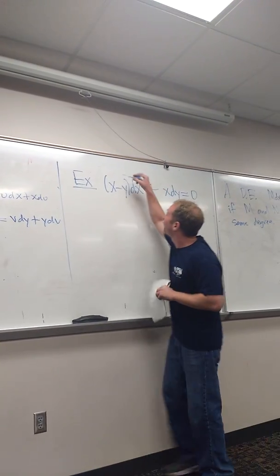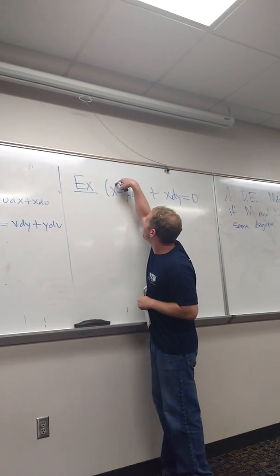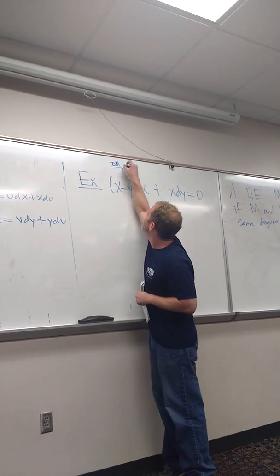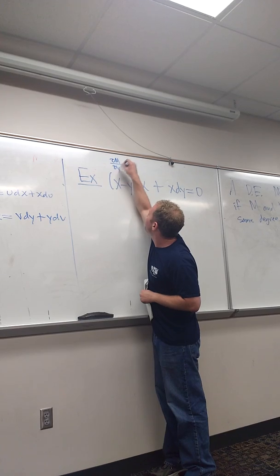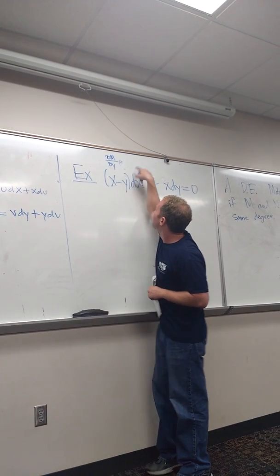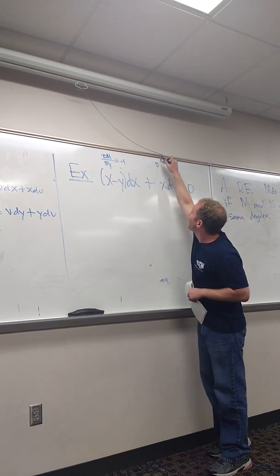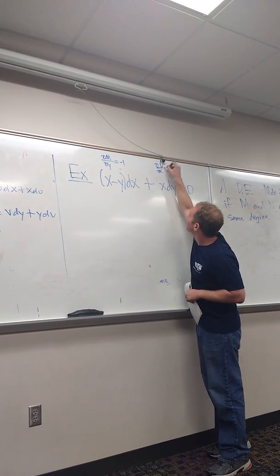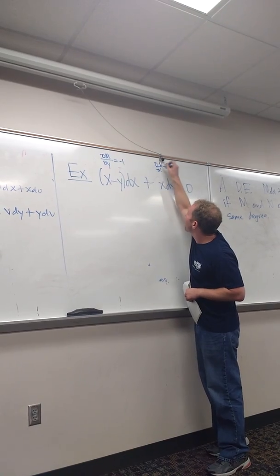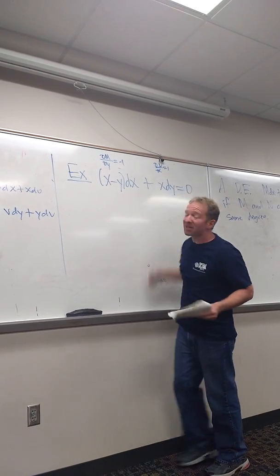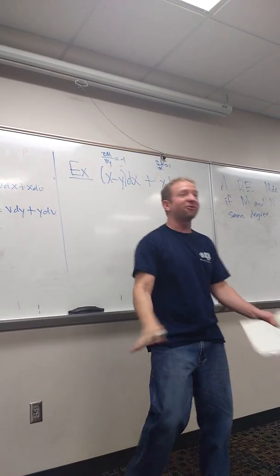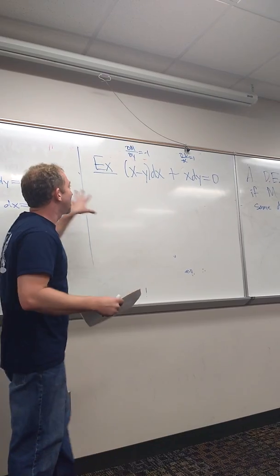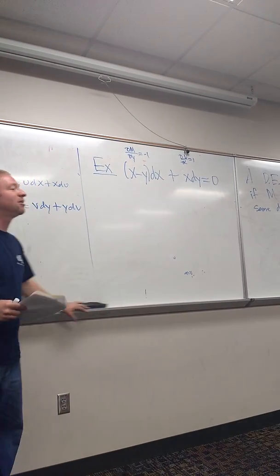Just for fun — if this was M, del M del y, del N del x, what would that be? We'd get 1 and then del N del x equals 1. So it's not exact. Can we make it exact? Probably, but I don't want to find out. We've only got 9 minutes, so let's go ahead.